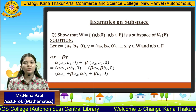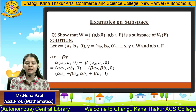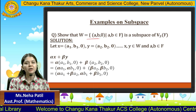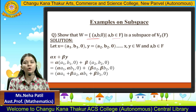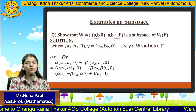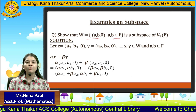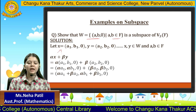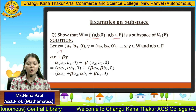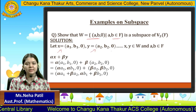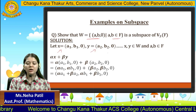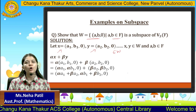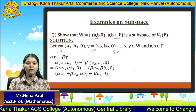Now let's see one example on subspace. Let's show that W, where elements in W are of the form (a, b, 0) where a and b both are scalars belonging to the field F, is a subspace of vector space V. Let's take two elements x equal to (a1, b1, 0) and y equal to (a2, b2, 0) belonging to the subset W. Here a1, b1, a2, b2 are all scalars belonging to the field F.